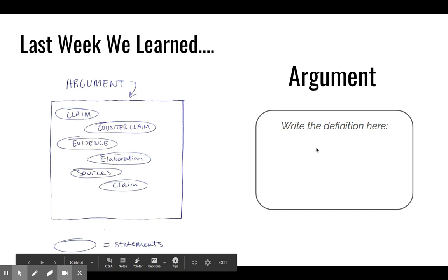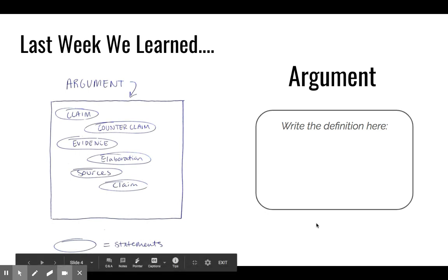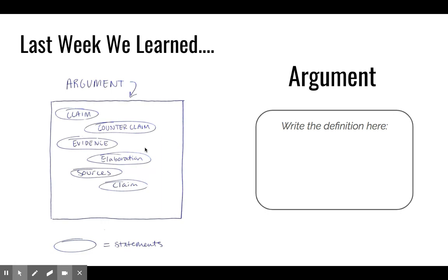So you have thought about your definition. We learned that an argument is a group of statements that lead to a conclusion. In this visual, we have everything circled as a statement — they can look different, and when you put them all together, they create an argument. This is the argument as a whole.